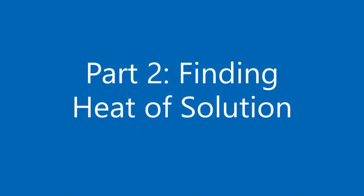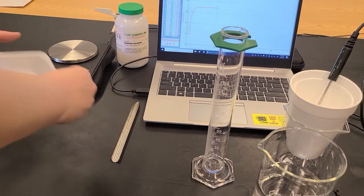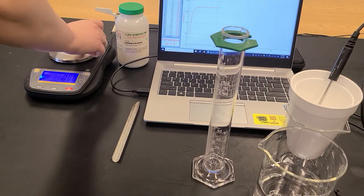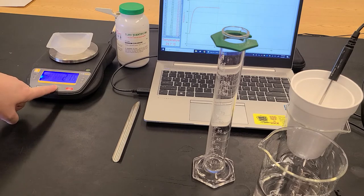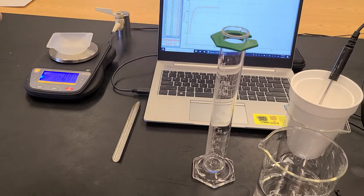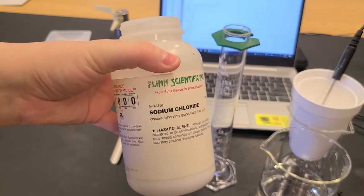Next we need to find the heat of solution. So I'm going to begin by measuring out around 5 grams of solid here. So I'm going to measure this out for sodium chloride.